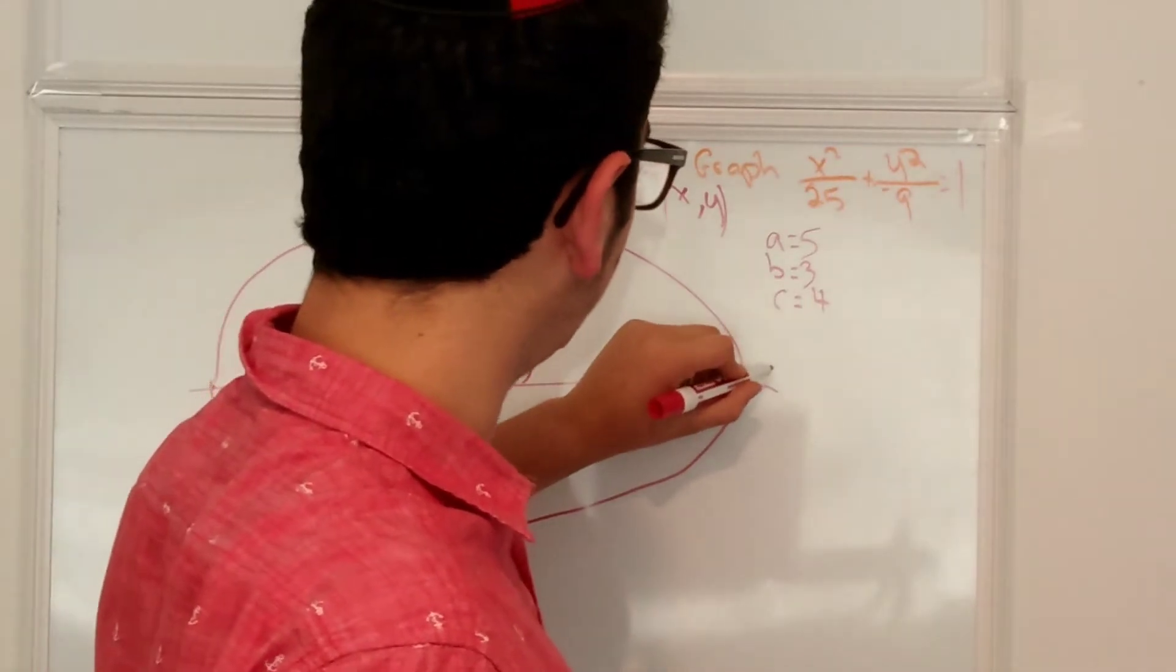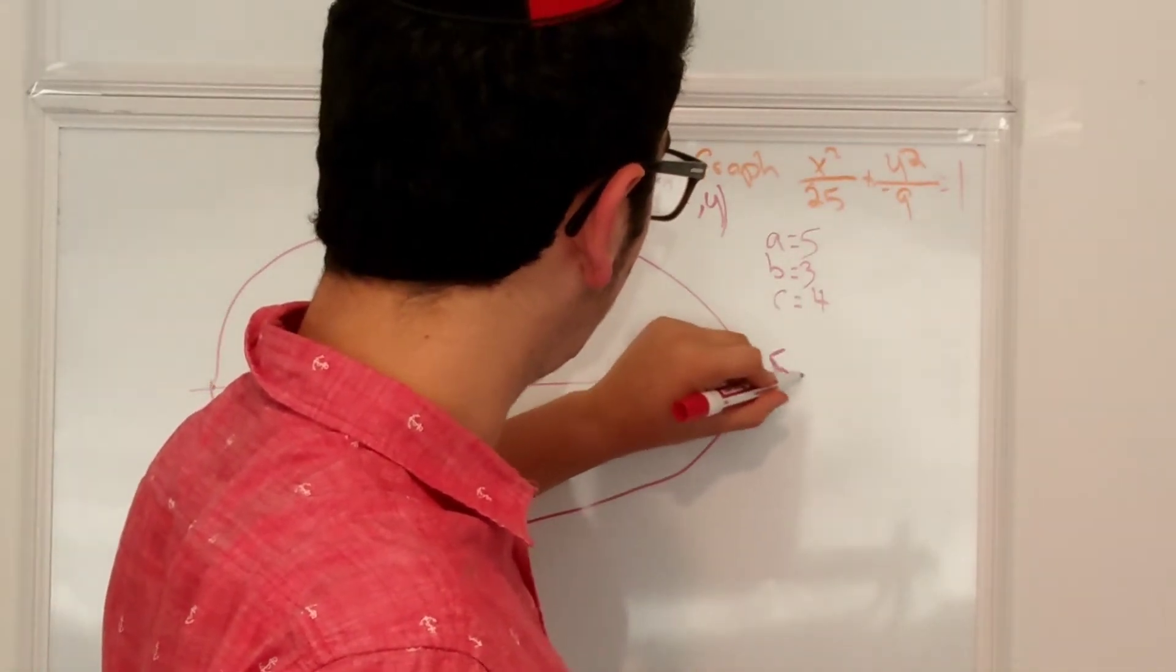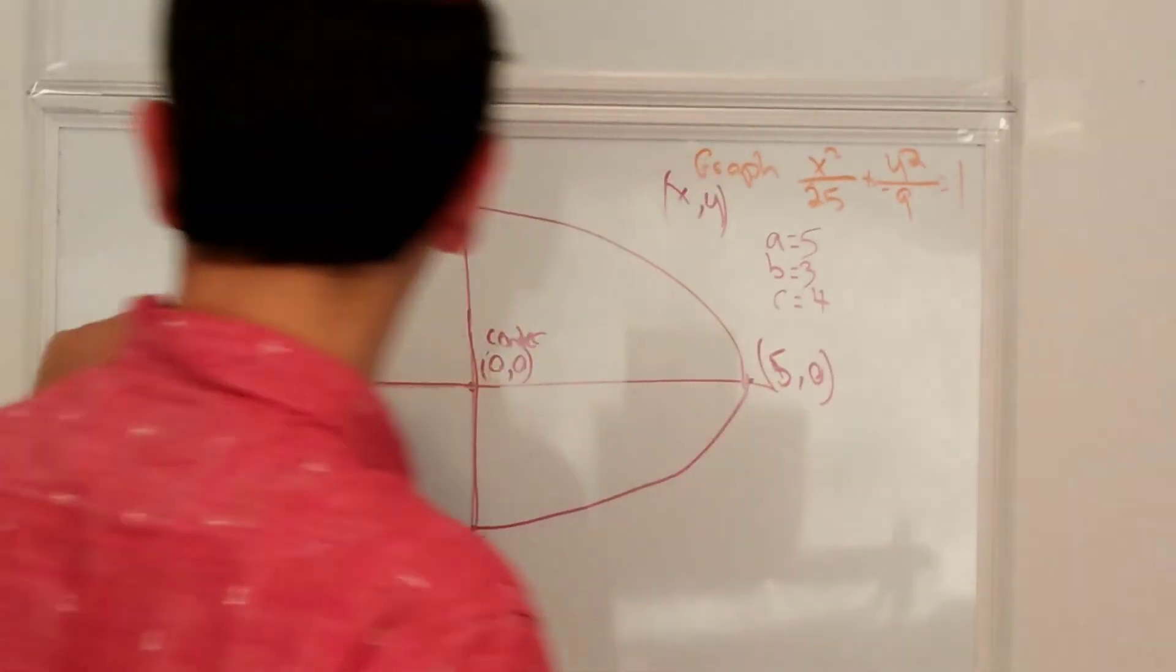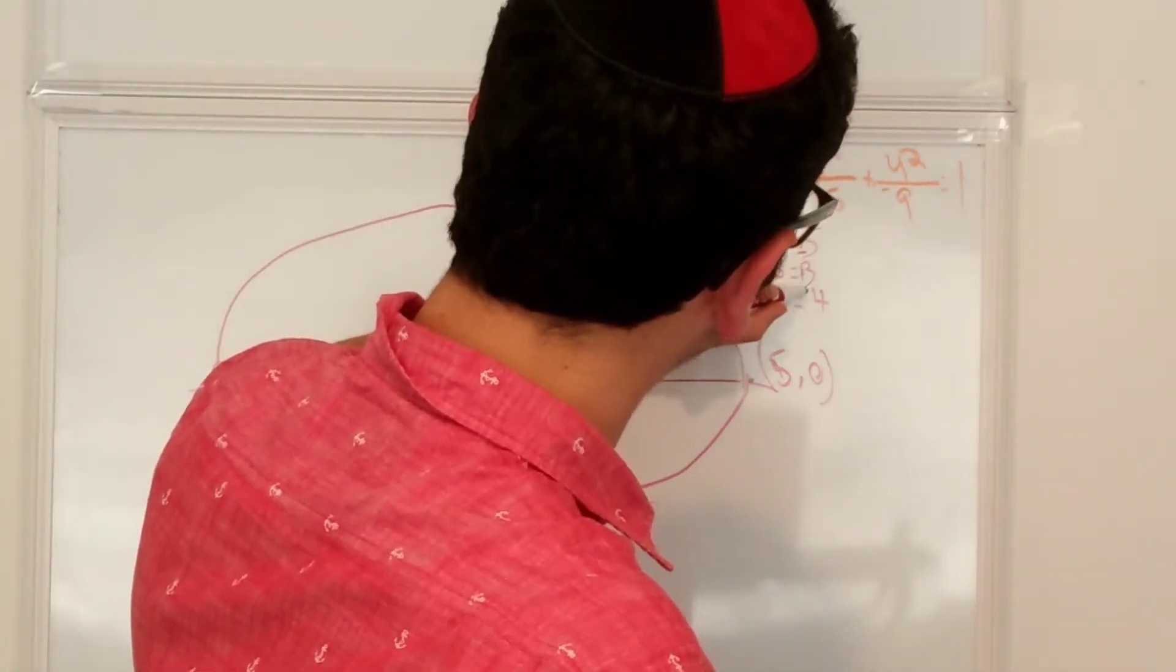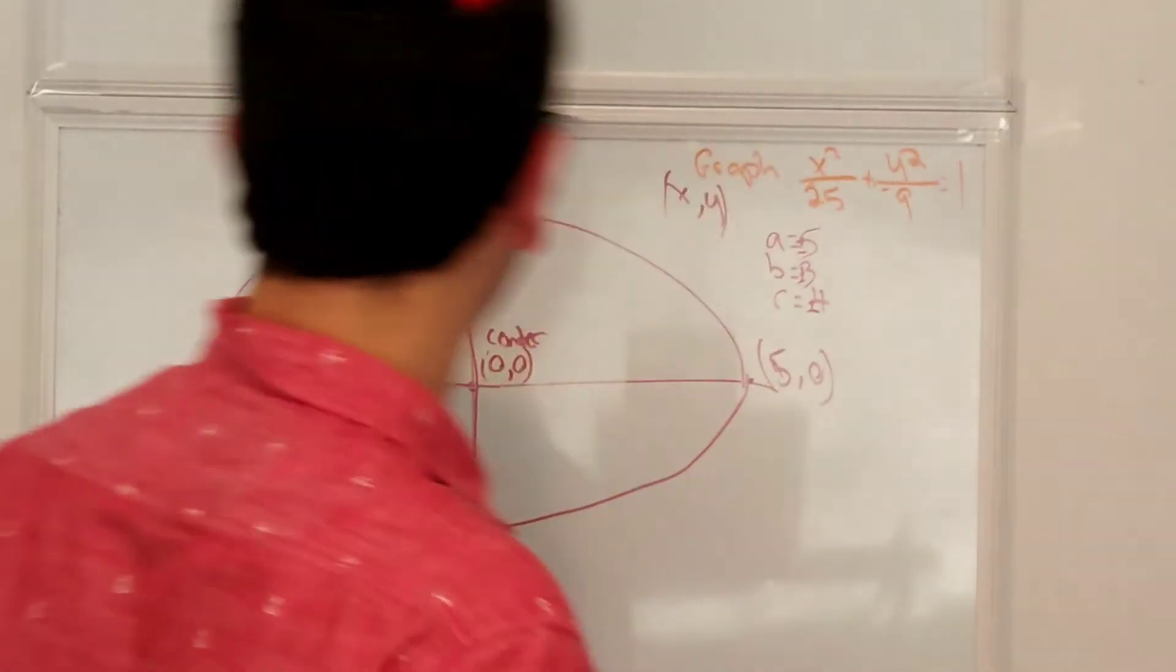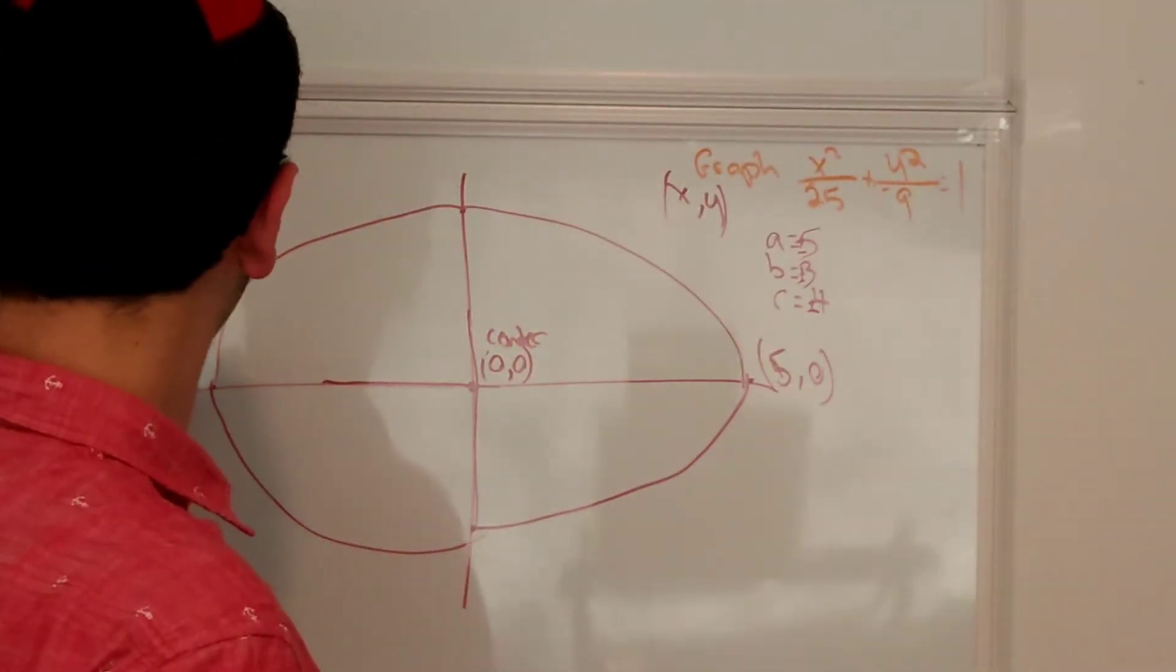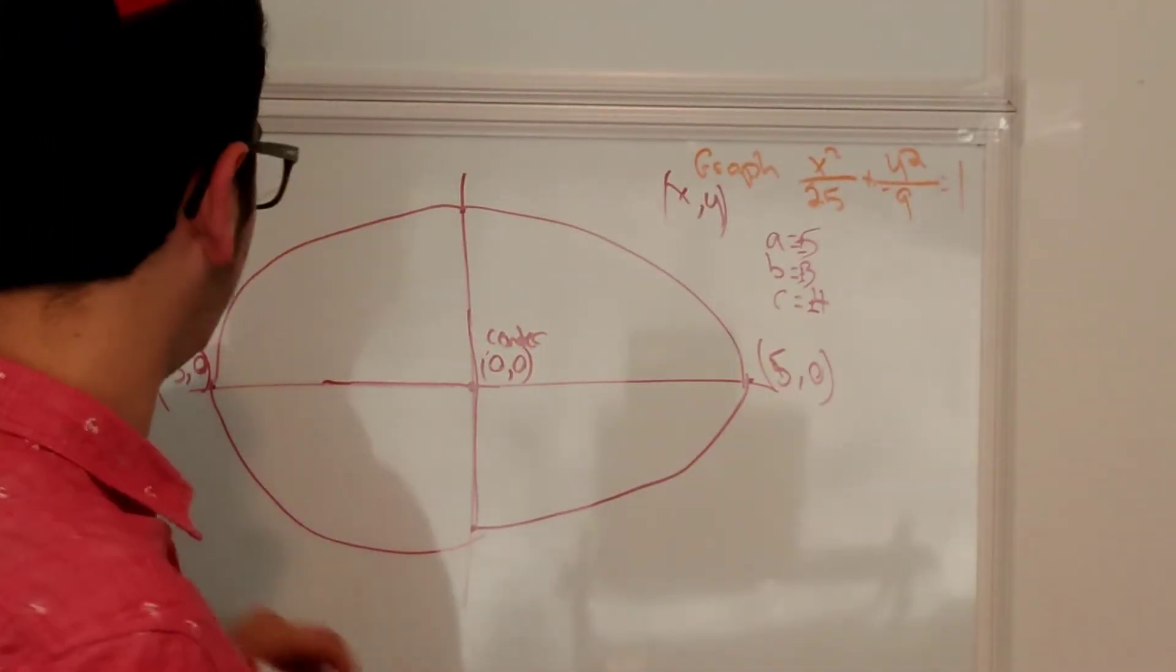So this is going to be 5, 0. Or when I say a equals 5, I should really say plus minus. Sorry about that. This is minus 5, 0.